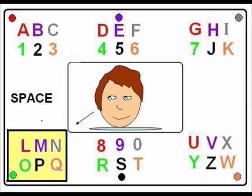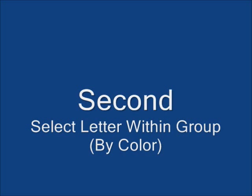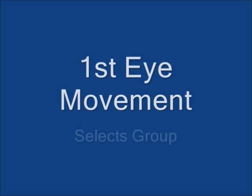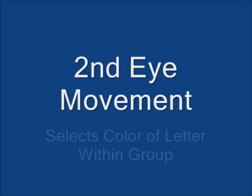There are many letters in each group, so unless the user wants the letter within the group that matches the group color, he must make a second selection to show his partner the color of the letter he's selecting within that group. The M is purple, so the user now gazes at the purple dot. The partner will call out 'purple.' The partner now knows it is the purple letter within the green group and calls out M. In other words, the first eye movement selects the group and the second eye movement selects the color of the letter within the group.